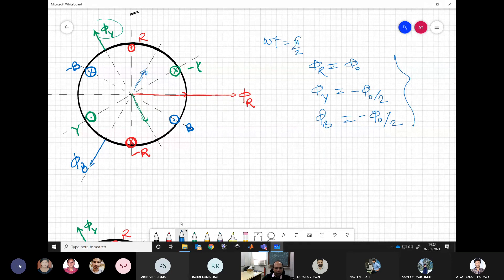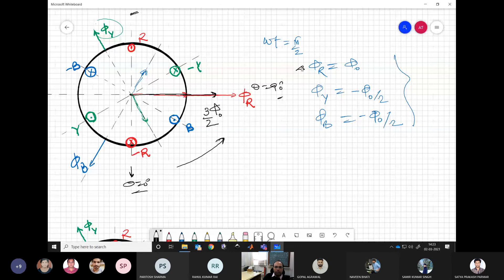And if you add all these three again vectorially, then it will come along the r axis, and this will have value of 3 phi naught by 2. So now the flux which was here at theta equal to 0, now it is here at theta equal to 90 degrees. So we see that tendency to rotate with time because of this spatial distribution.